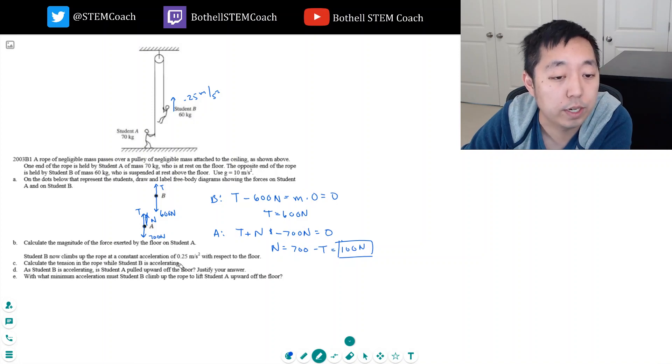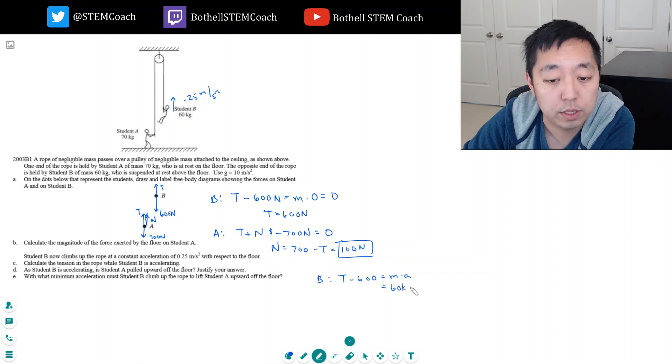So now we're still doing these equations, but the acceleration is not zero for B. For B in this part, the net force is still T minus 600, but that equals M times A, which is 60 kilograms times 0.25 meters per second squared, and that's 15 Newtons. So T minus 600 equals 15, so T equals 615 Newtons.